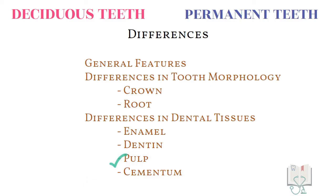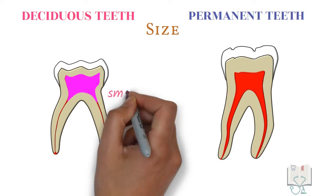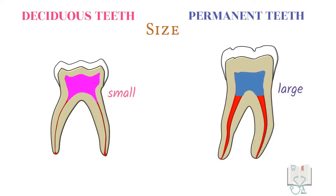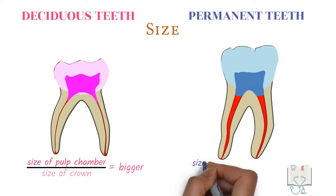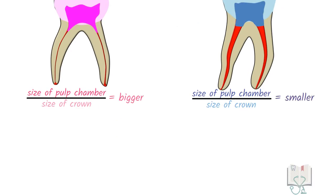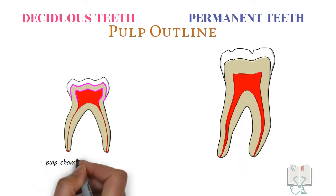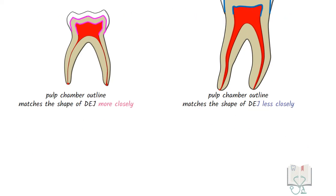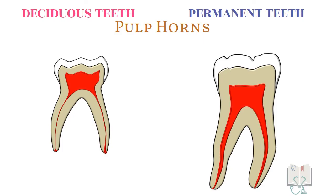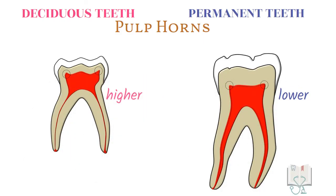Next, differences in pulp. Just like enamel and dentine, in deciduous teeth the pulp chamber is smaller than that in permanent teeth. However, if seen in proportion to the crown size, in deciduous teeth the size of the pulp chamber is larger than that in permanent teeth. In deciduous teeth, the pulp chamber outline follows the dentino-enamel junction more closely than in permanent teeth. In deciduous teeth, the pulp horns are higher as compared to the low-placed horns in permanent teeth.